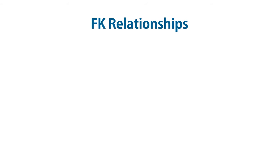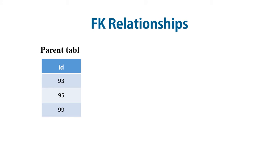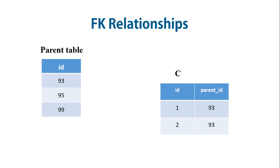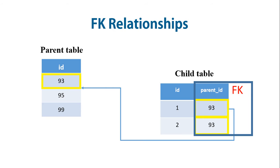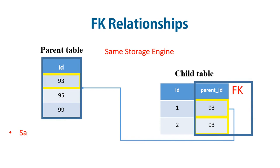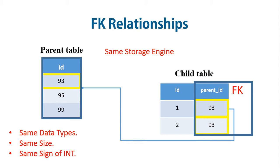Foreign key relationships involve a parent table that holds the central data values and a child table with identical values pointing back to its parent. The foreign key clause is specified in the child table. The parent table and child tables must use the same storage engine, and corresponding columns in the foreign key and the reference key must have similar data types. The size and sign of integer types must be the same.